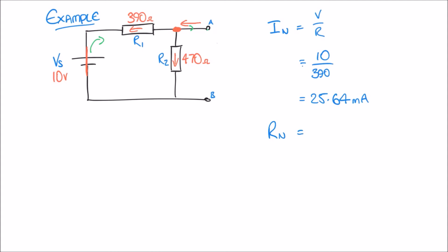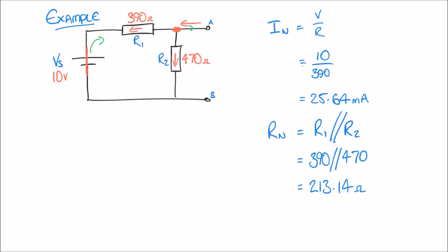For our Norton resistance R_N, we need R1 in parallel with R2. The double-slash notation is shorthand for resistors in parallel. Calculating 390 Ω in parallel with 470 Ω gives us a Norton resistance of 213.14 ohms.